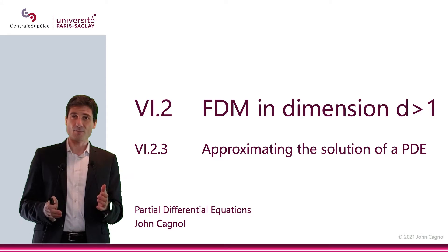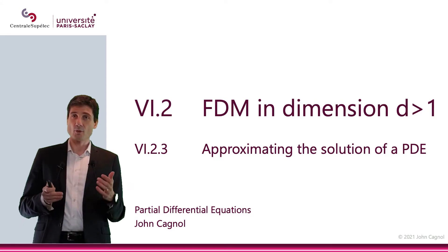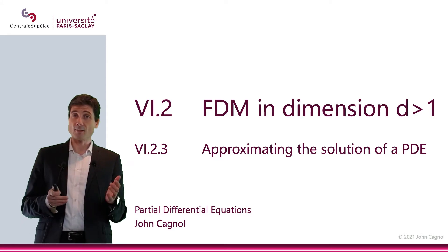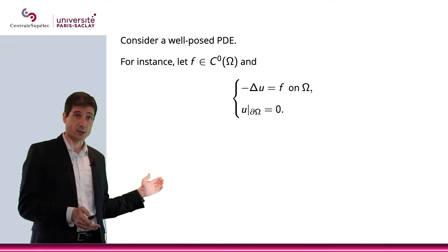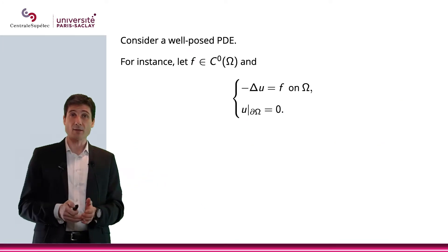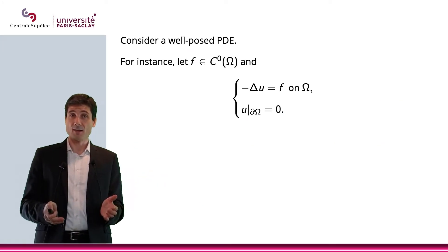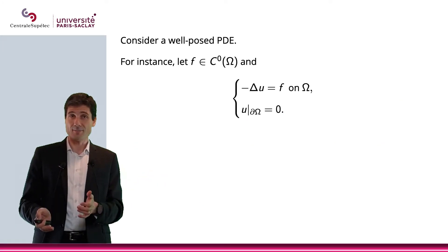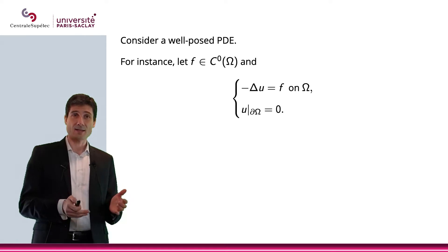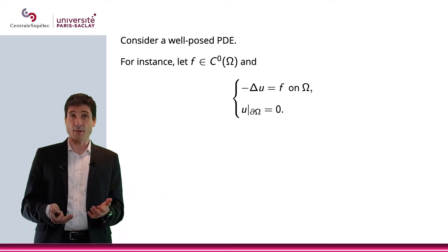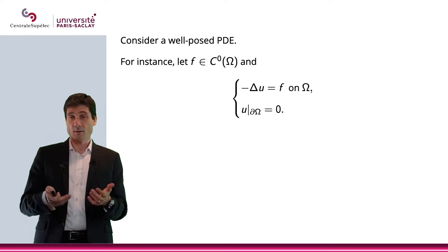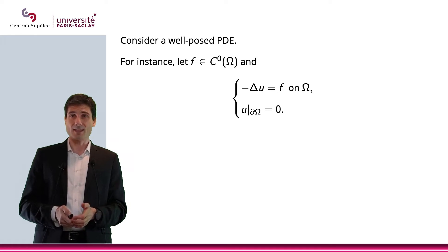In this video, we're going to use the finite difference method to approximate the solution to this equation: minus Laplace u equals f on omega, and u equals zero on the boundary of this domain omega, which means that we have Dirichlet boundary conditions.